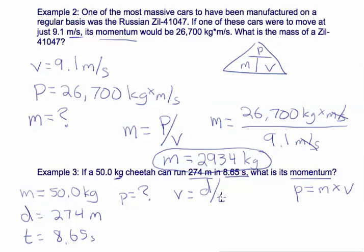So let's solve for our velocity first, after we check our units. Kilogram, that's good. That's our SI units. Meters per second, good. 274 meters divided by 8.65 seconds gives us a velocity of 31.7 meters per second.